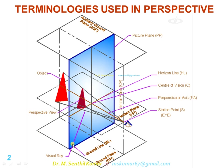The blue shaded plane is called the picture plane, abbreviated as PP. On that plane you have to get the perspective image of the object. The station point is some distance in front of the picture plane. With these two specifications — how much above the ground plane and how much in front of the picture plane — the observer position is partially specified, but one more specification is needed.